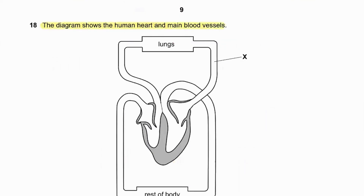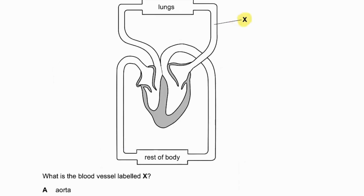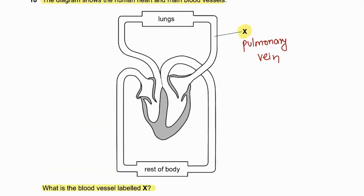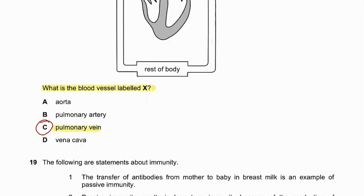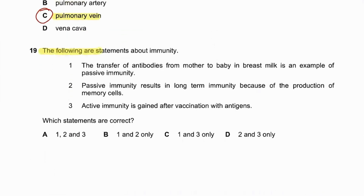Question number eighteen: the diagram shows the human heart and main blood vessels. Label X connects to the lungs, representing the pulmonary vein, which brings oxygenated blood back to the heart. So 18C is the answer.